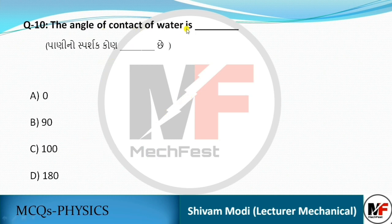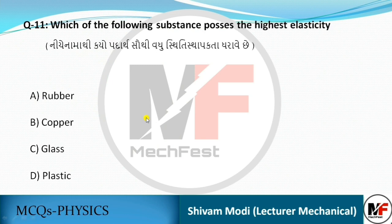The angle of contact of water — how much is it? Obviously the answer is 0 degrees. Answer is option A.